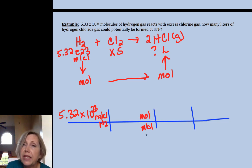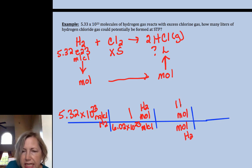That's one mole of hydrogen. Now I want to eliminate moles of hydrogen and I want moles of HCl. There's a 2 in front of the HCl, there's an implied 1 in front of the hydrogen.